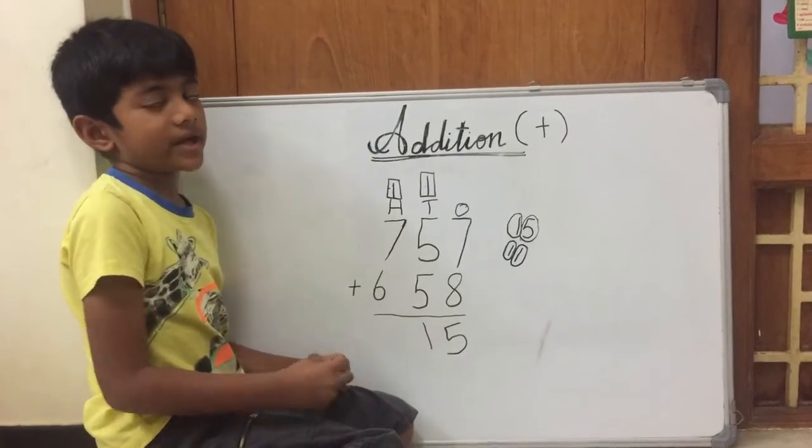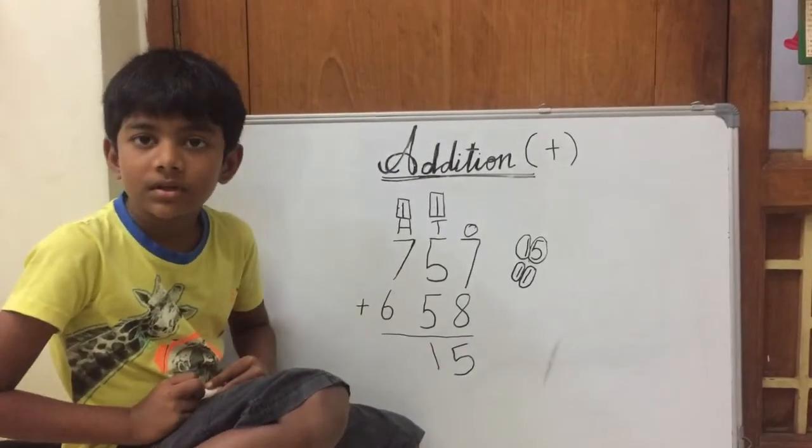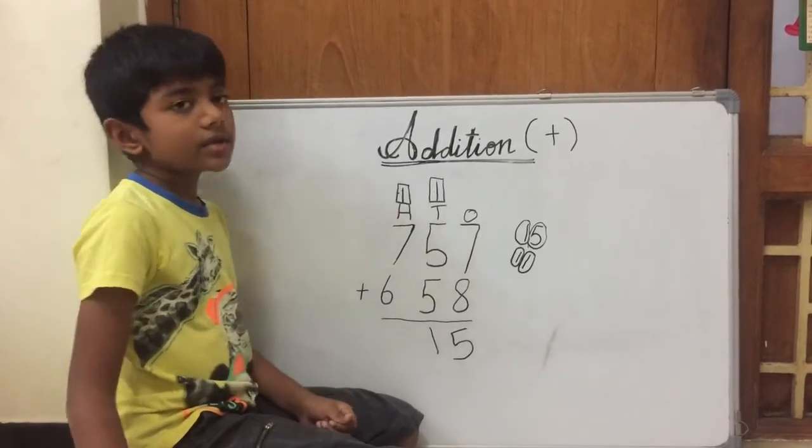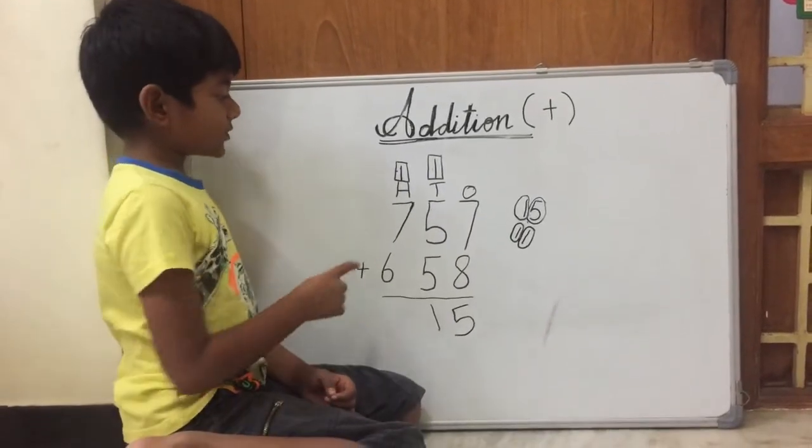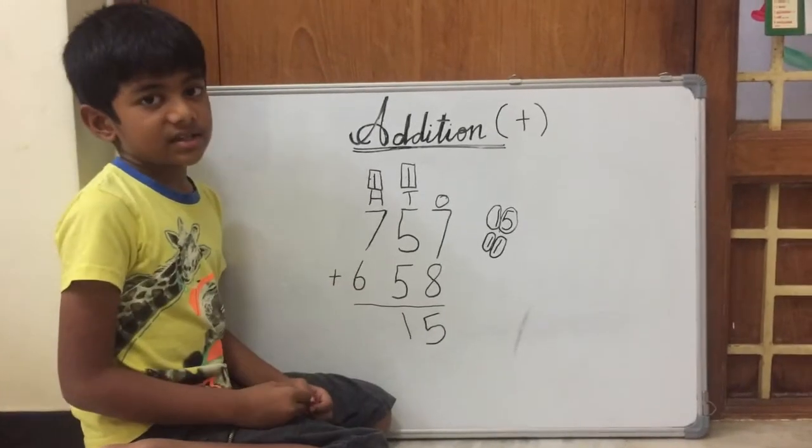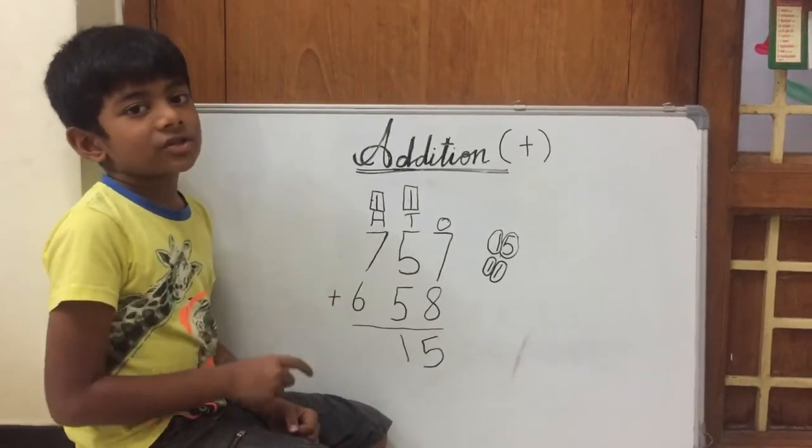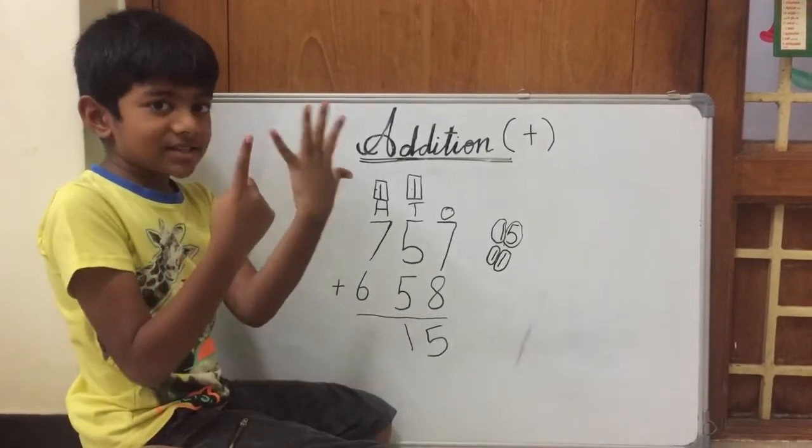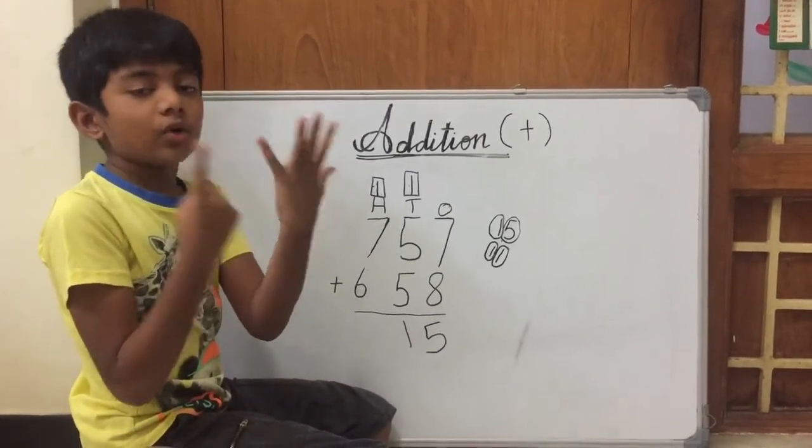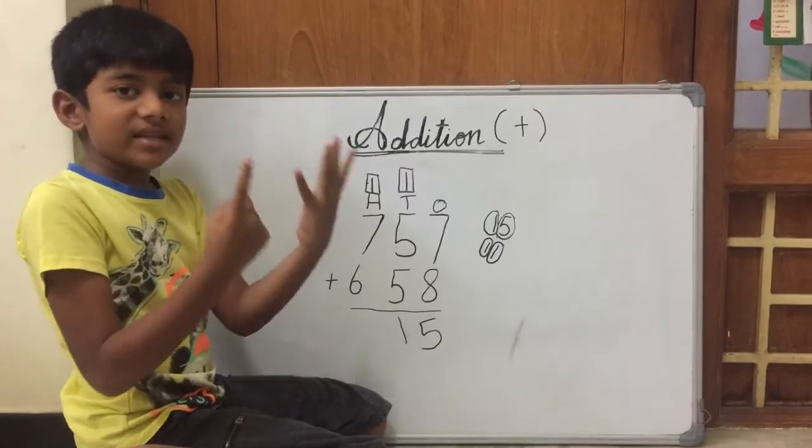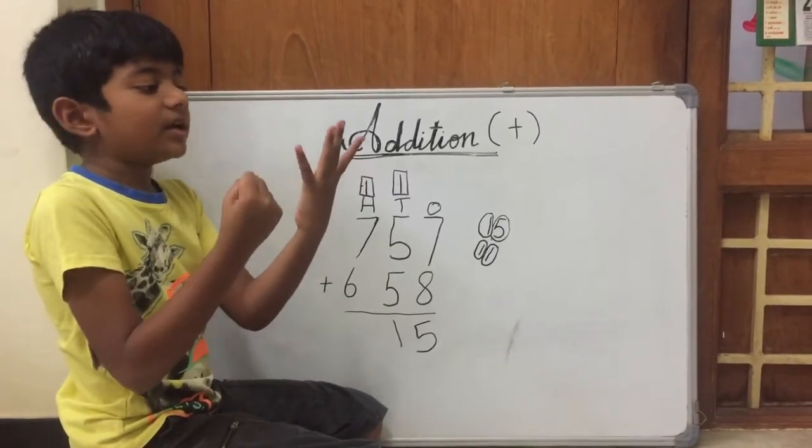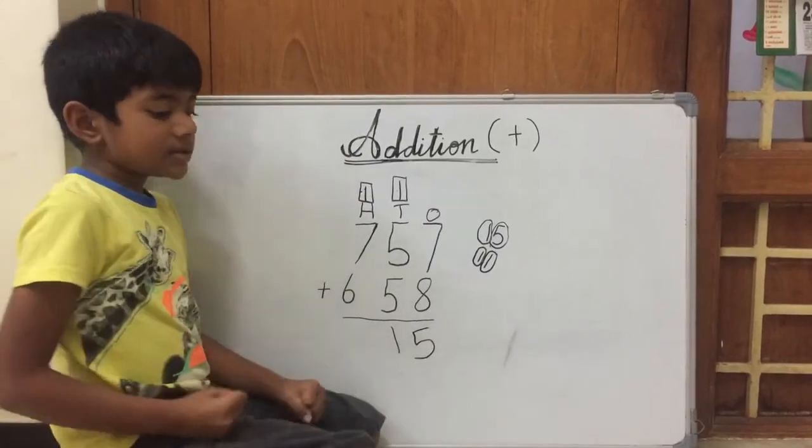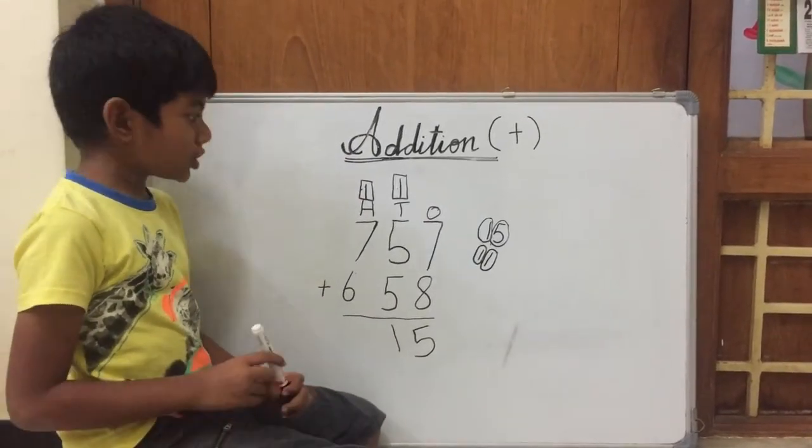Let's use Kanesh's method. Which is the greatest number in 7 plus 6? Yes! It is 7. So I should keep 7 in my mind and 6 in my fingers. So now let's do it: 7 after 8, 9, 10, 11, 12, 13. So the answer is 13.